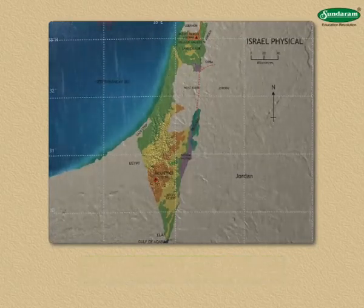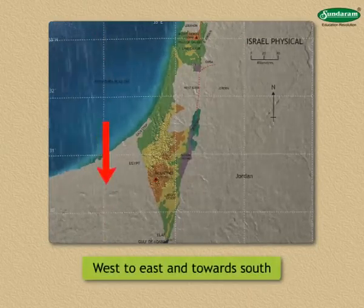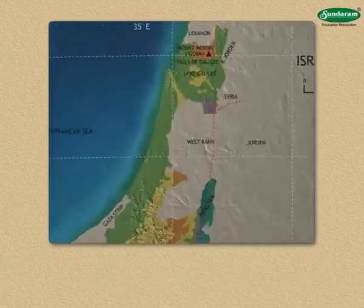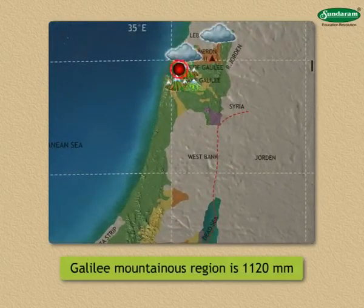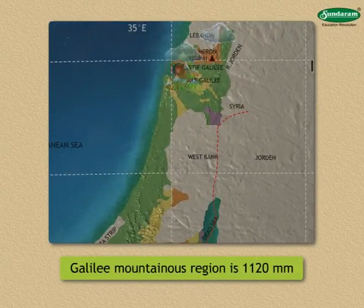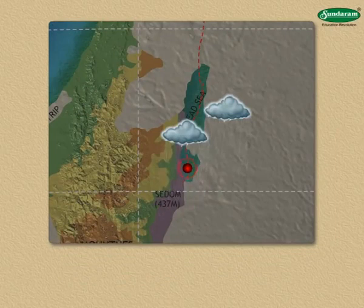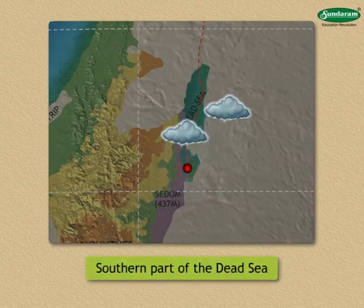The rainfall generally decreases from west to east and towards the south. The annual rainfall in the Galilee mountainous region is about 1,120 mm, while the rainfall is as little as around 30 mm in the southern part of the Dead Sea.